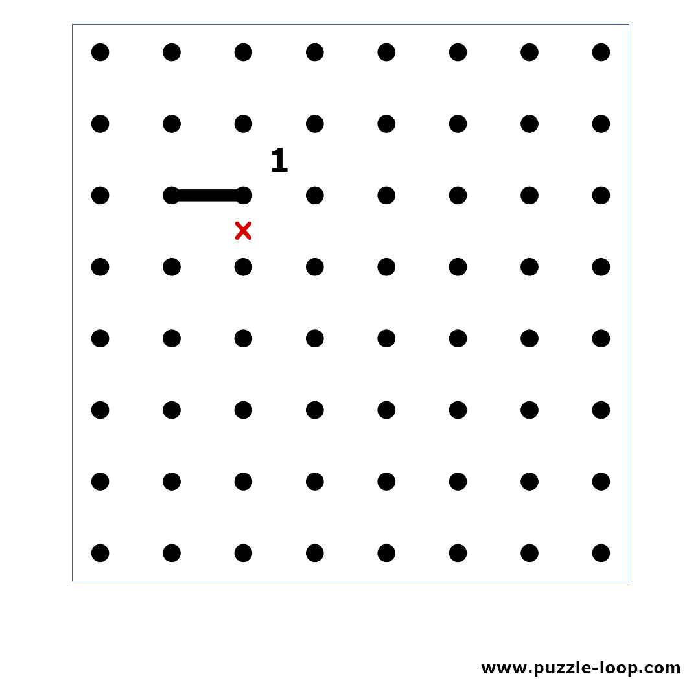In a situation like this, we can place X's here. This is because the line will continue in one of these directions and it will complete the 1.